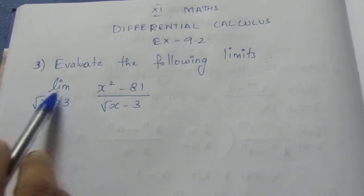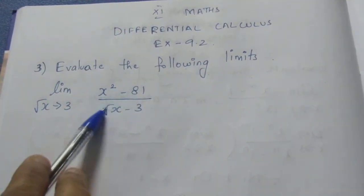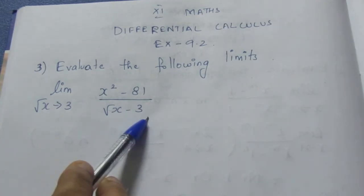Limit as root x tends to 3: x² minus 81 by root x minus 3.